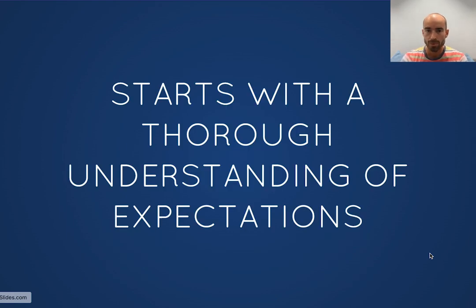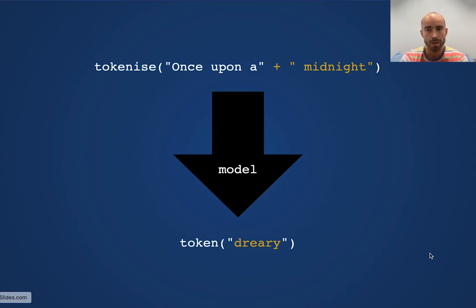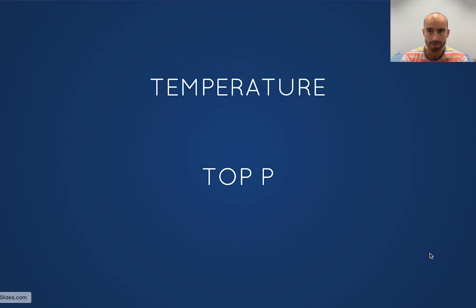So going back to where does creativity come from? Creativity is starting with a thorough understanding of expectations. So the model thoroughly understands the expectations that we have around the knowledge or the prose that it's ingested as training data. But then it takes it a step further. What we've been talking about so far is running the model and always taking the most likely next token. But what if instead of doing that, we picked a different token, still a popular token, still a reasonable suggestion for what could come next, but just not always picking the most popular, picking one of the few most popular. So in this case, we've picked the next most popular. Once upon a midnight and then it's predicted dreary for us. This has taken us down a different path and produced something a little bit more creative.